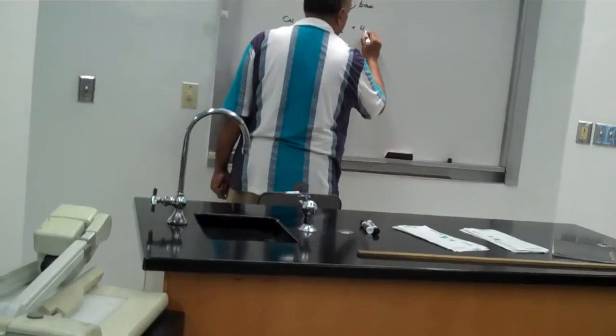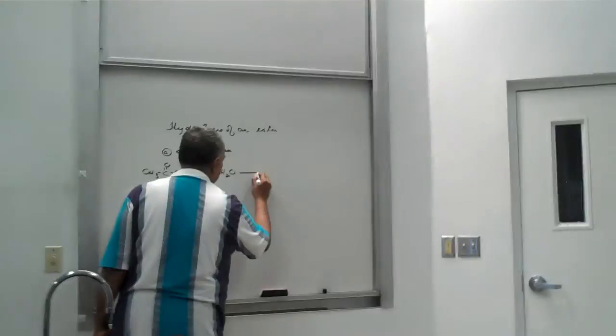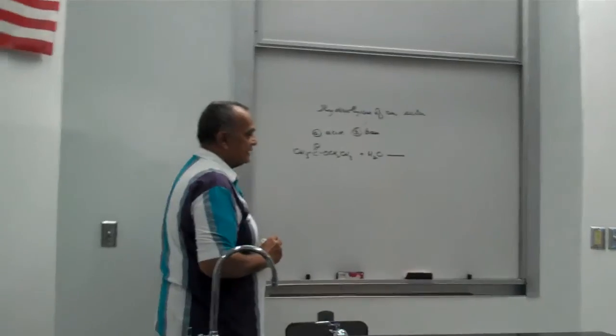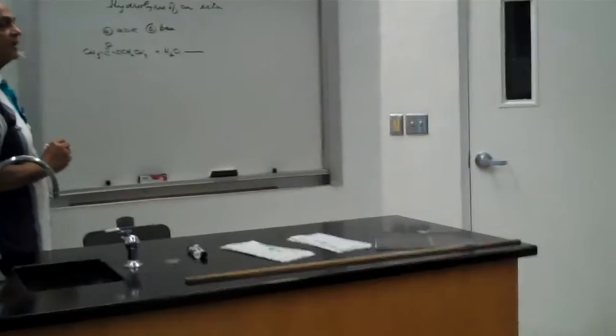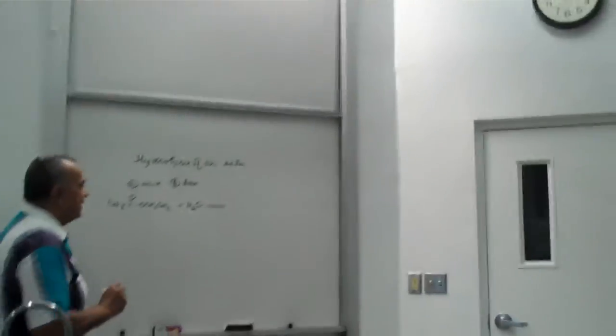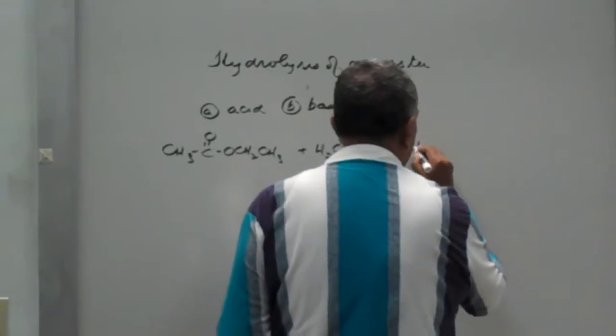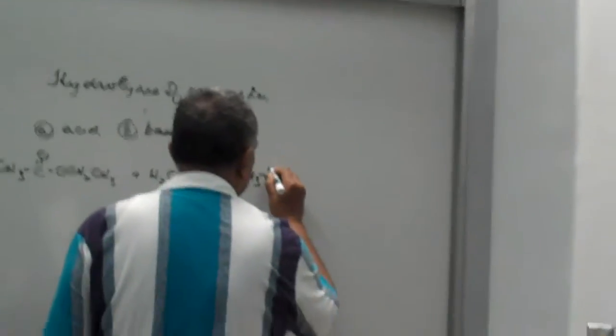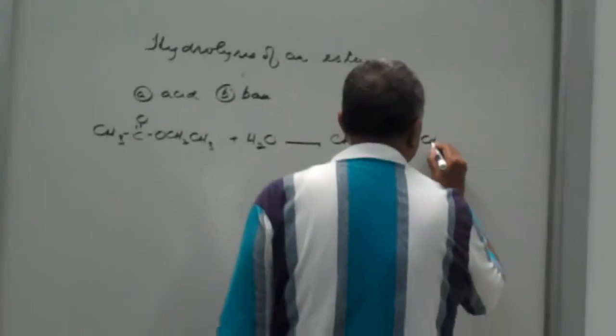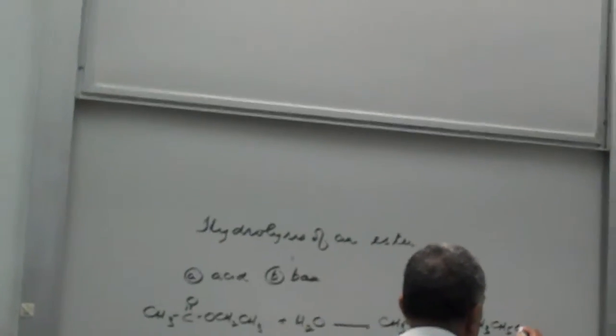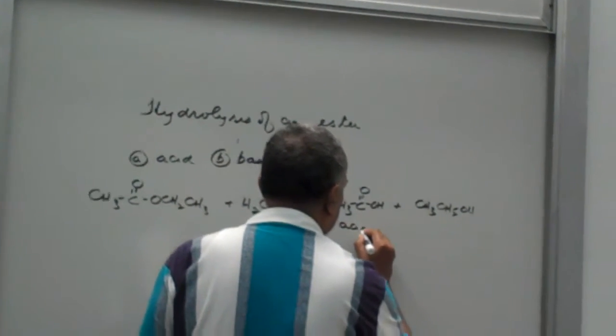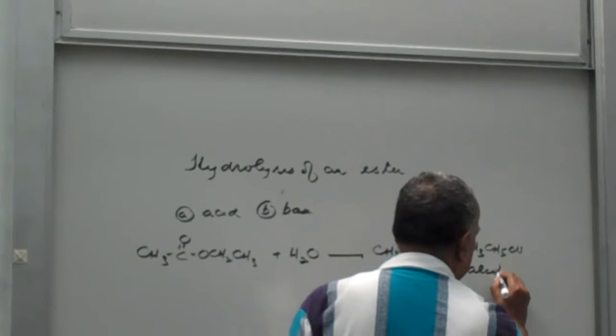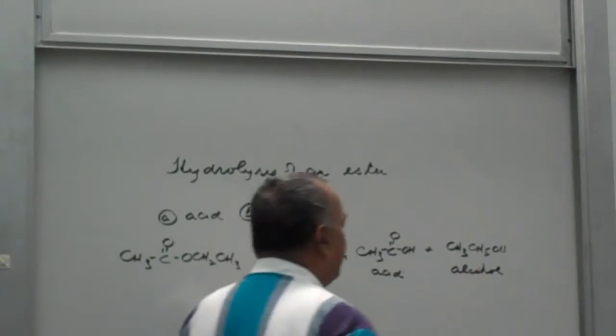If I hydrolyze an ester in the presence of an acid, it's going to break up to give me the pairing from which the ester was made. So I'm going to go back to give ethanoic acid plus ethanol. So hydrolyzing an ester yields the parent acid and the parent alcohol.